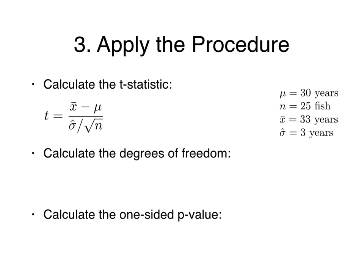In this problem, we know the average lifespan of goldfish is 30 years, and we looked at a sample of 25 fish with an average lifespan of 33 years and a standard deviation of 3 years. Thus, mu equals 30, N equals 25, x-bar equals 33, and sigma-hat equals 3. Plugging these into the formula, t equals 33 minus 30, divided by 3 over the square root of 25. This simplifies to 3 over 3/5, which equals 5.